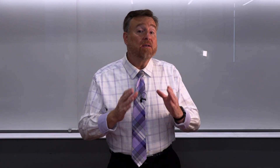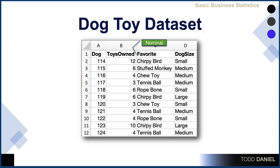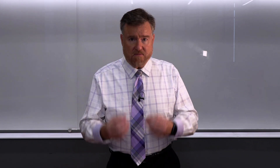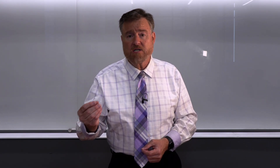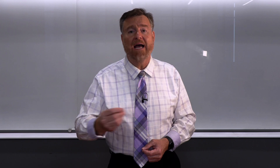How about an ordinal variable? The ordinal variable would be dog size. We have dogs that are small, medium, and large. There is a difference and there is an order, but there is no quantity. We know that small is smaller than medium, and medium is smaller than large, but we don't know by how much.